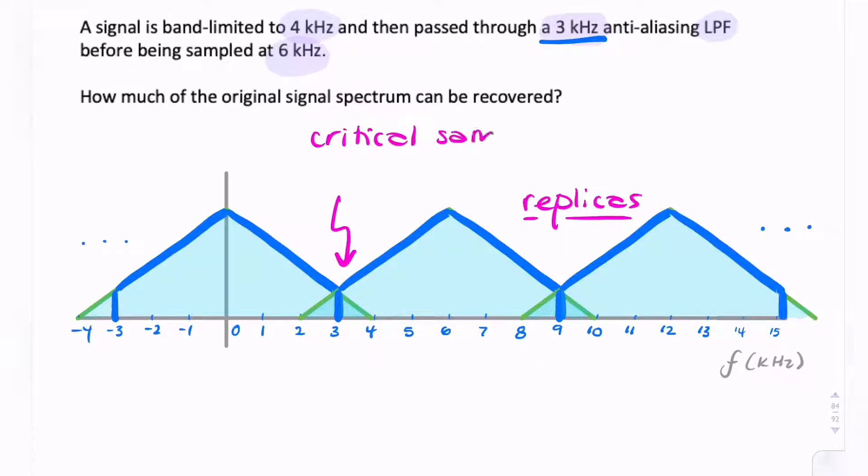Critical sampling is what we sometimes refer to as Nyquist sampling. That is sampling at exactly the Nyquist rate. So here, our sample rate is 6 kHz, and the signal bandwidth after filtering was 3 kHz.